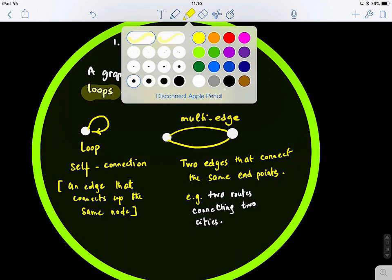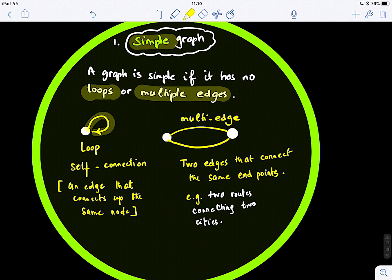So you guys can see that this is how we define a loop. So I talked about this. This is self-connection basically. We call it self-connection. So an edge that connects up to the same node and a multi-edge is basically, you guys need to make a difference between a directed graph and a multi-edge. What is the difference?